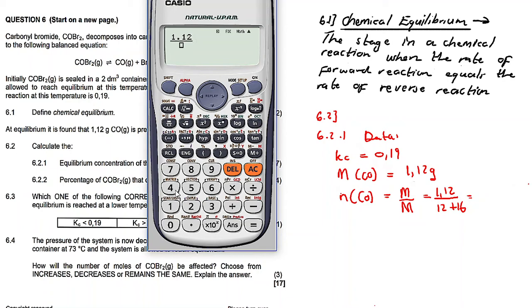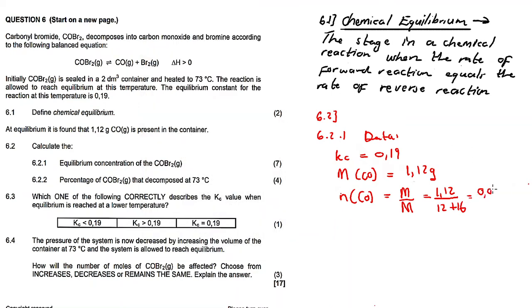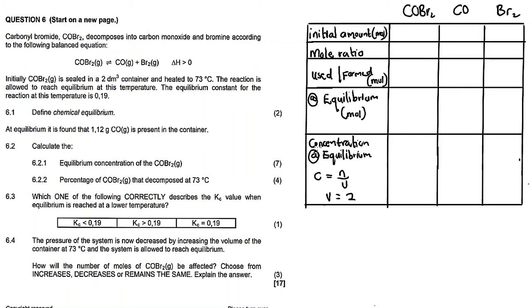1.12 divided by 28 is equal to 0.04 moles. So we have 0.04 moles of carbon monoxide. I have already prepared a table for calculating the equilibrium concentration of carbonyl bromide. At equilibrium, the carbon monoxide moles are 0.04. Since carbon monoxide is a product, the equilibrium value equals the moles formed during the reaction.